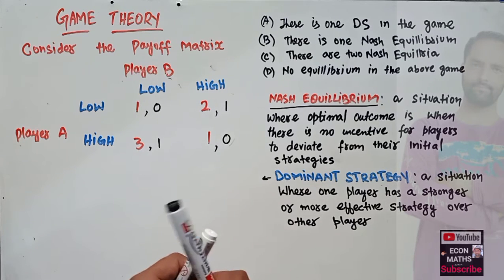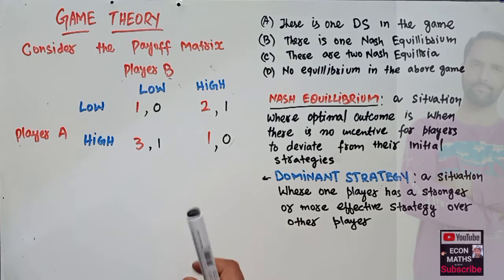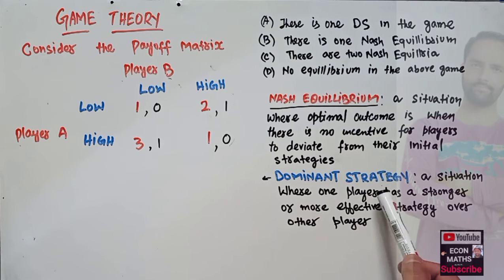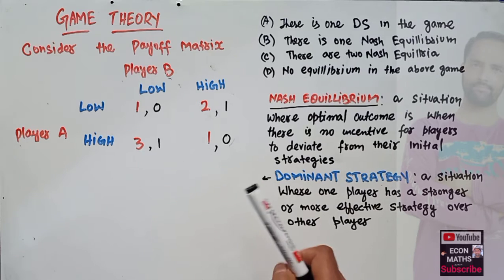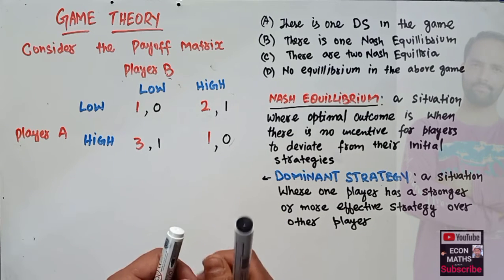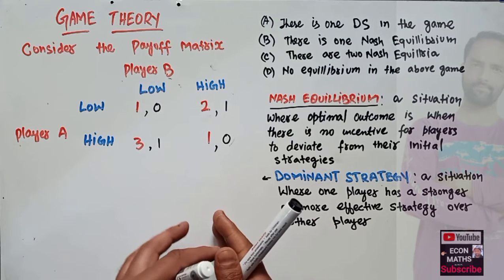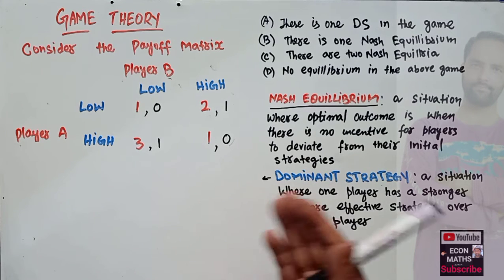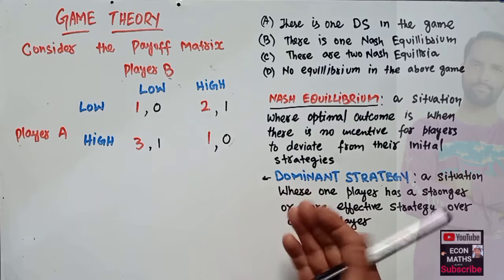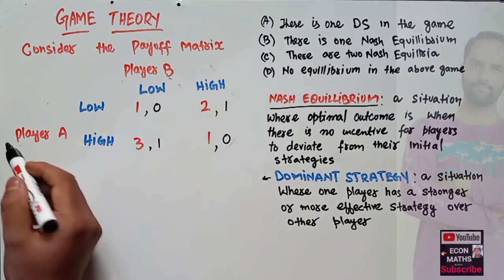First we will focus on dominant strategy. As I have explained in detail in an earlier video, a dominant strategy is a situation where one player has a stronger or more effective strategy over the other. In simple words, a dominant strategy is the one that will have the absolute best effect no matter what the opponent chooses to play. Let us first find out whether Player A has a dominant strategy or not.